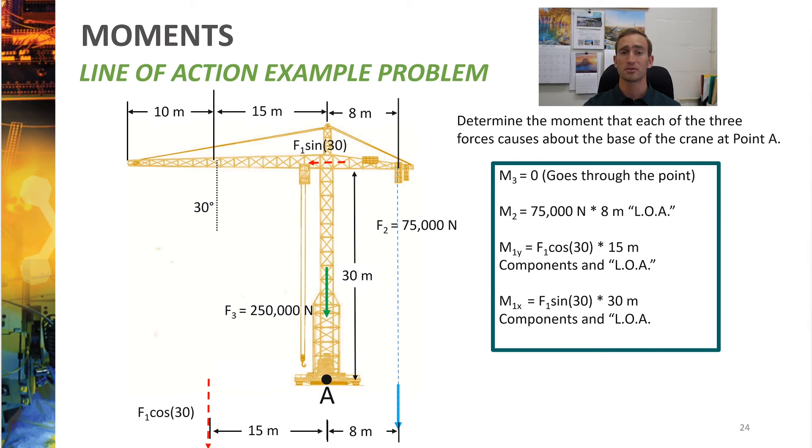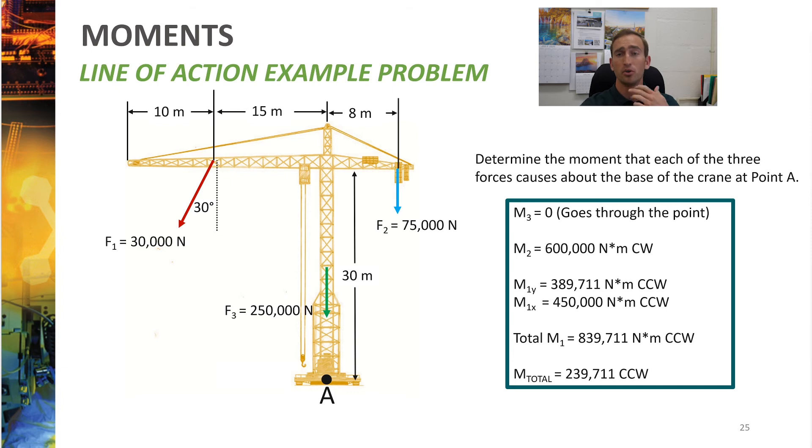So when we look at our solutions for this problem, as I just said, M3 goes through the point. That's a big old zero. It's not going to cause any moment. M2, using line of action, is 75,000 times 8 meters. And M1Y and M1X, when slid along their respective lines of action, gives you the following calculations right there. F1 sine 30 times the height of 30 meters, and F1 cosine 30 times the width of 15 meters. And when you do the math out, you'll get the following answers right here.